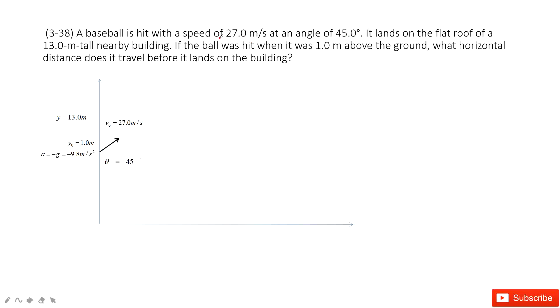So we can see, it tells us this is the initial position, right? Because it tells us the ball was hit when it was 1 meter above the ground. We choose ground as reference point. So this position, initial position, is 1.0 meter.